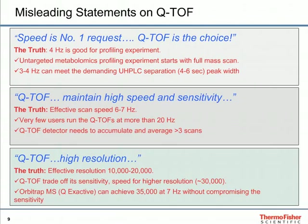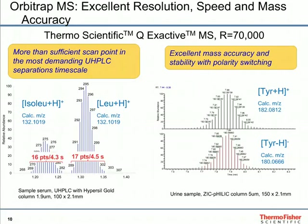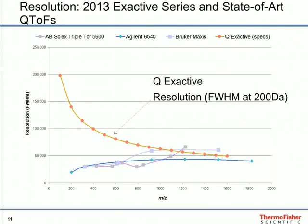Orbitrap offers excellent performance including resolution, speed, and mass accuracy. On the Q-Exactive with resolution at 70,000, we get more than sufficient scan points in the most demanding UHPLC separation timescale. In this case, we separated isoleucine and leucine from a serum sample by UHPLC and got 16–17 points across the 4.5-second peak width. In another demonstration, we see excellent scan-to-scan mass accuracy and stability with polarity switching. Orbitrap offers very high resolution — you can get much higher resolution in the low mass range, which further emphasizes that Orbitrap is actually the right choice for small molecule and metabolomics measurement.